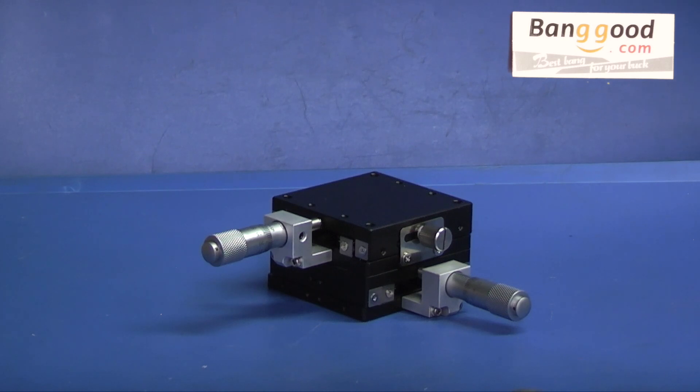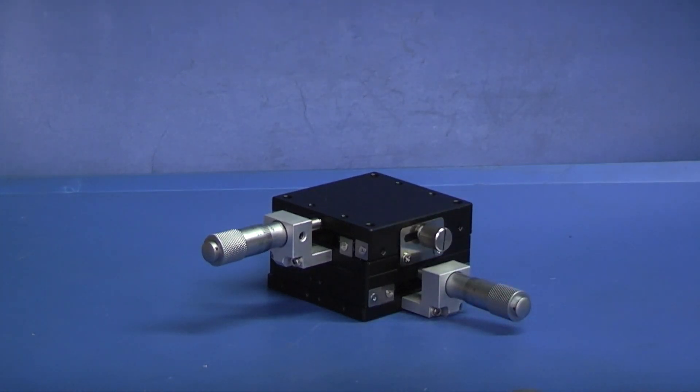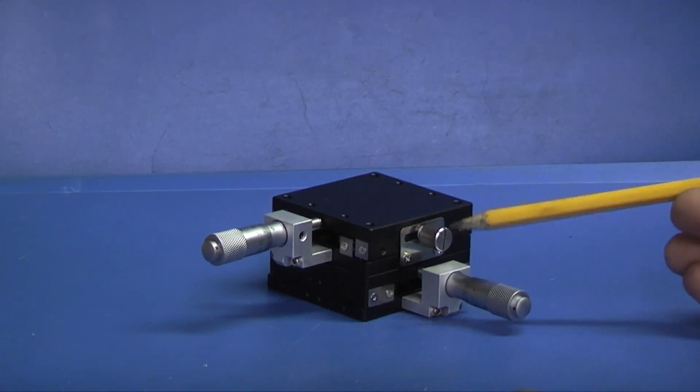I thought I'd show you this measuring stage, you might not have seen one before. It's an X and Y stage so that means it moves in this direction and this direction. It has two locking screws, here's one so you can move it and lock it in position.